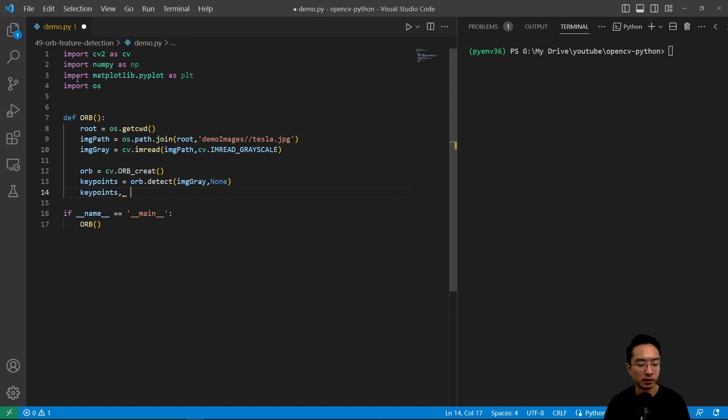And keypoint equals, I'm not going to use a second output, orb.compute, pass in imagegray and keypoint.